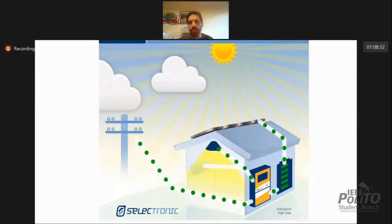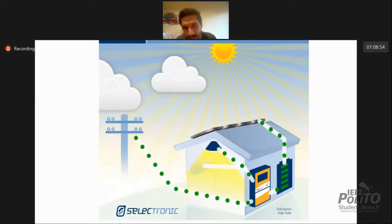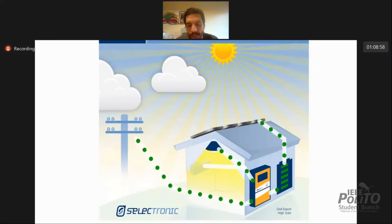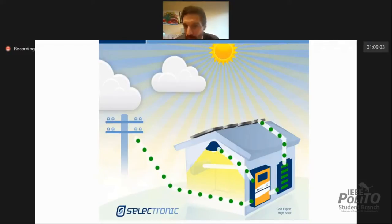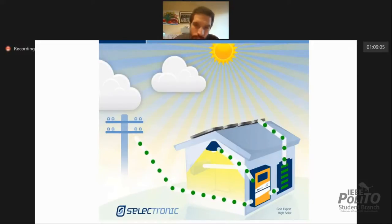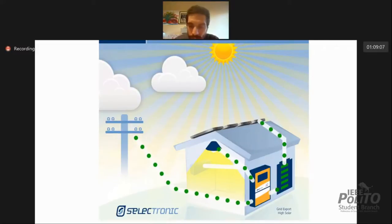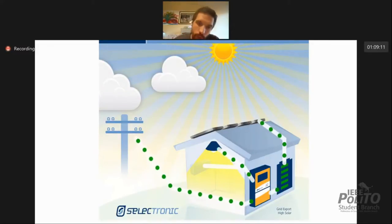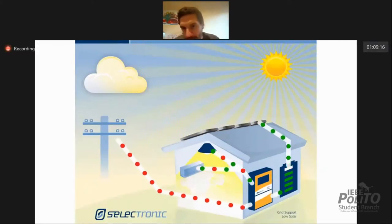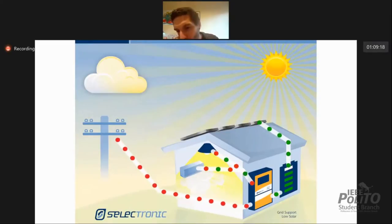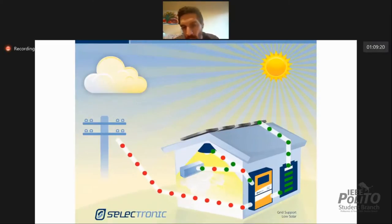On the opposite end, we have the nano grid, which represents putting generation as close as possible to the load. For example, a photovoltaic panel that powers a house and also sells a bit of energy to the grid. In the opposite case, when solar power is not enough, some energy is taken from the grid.